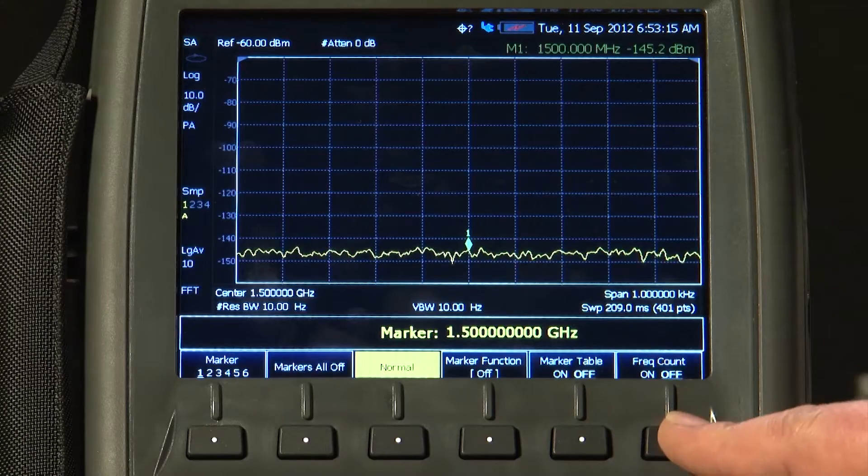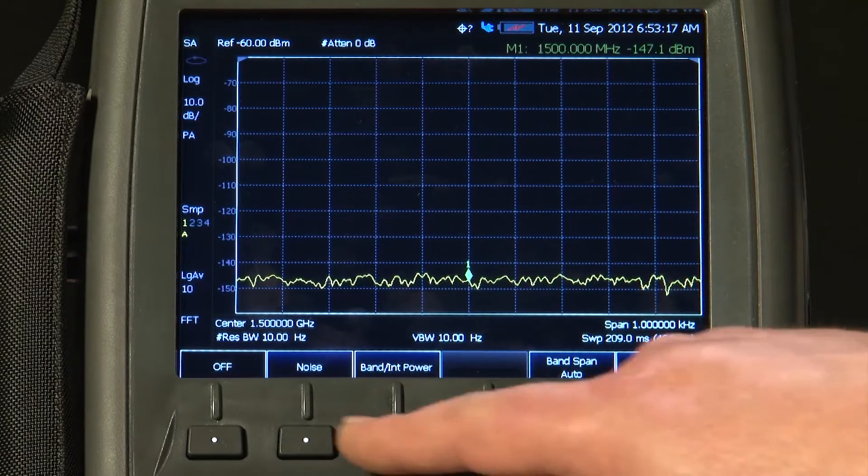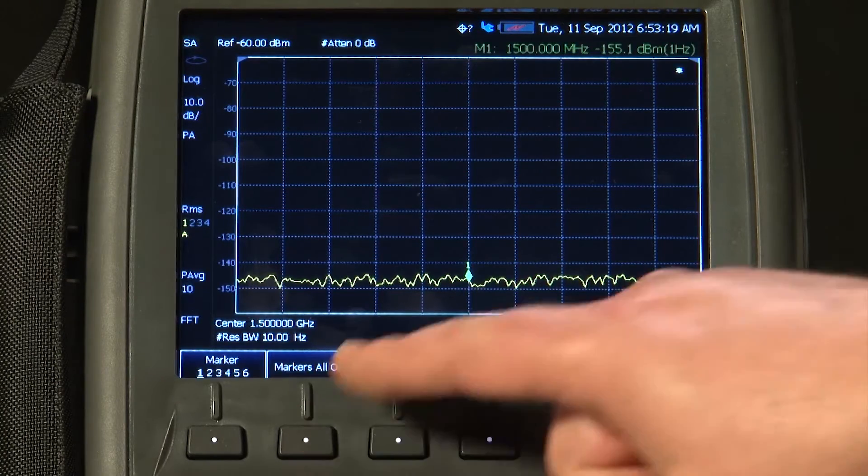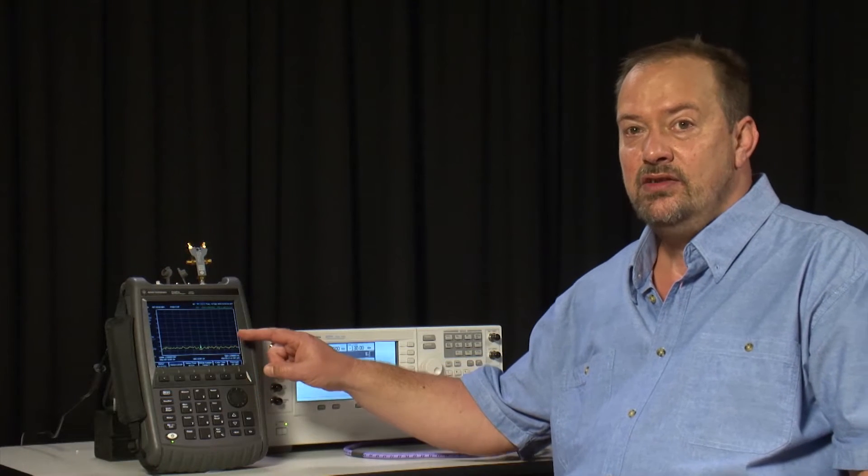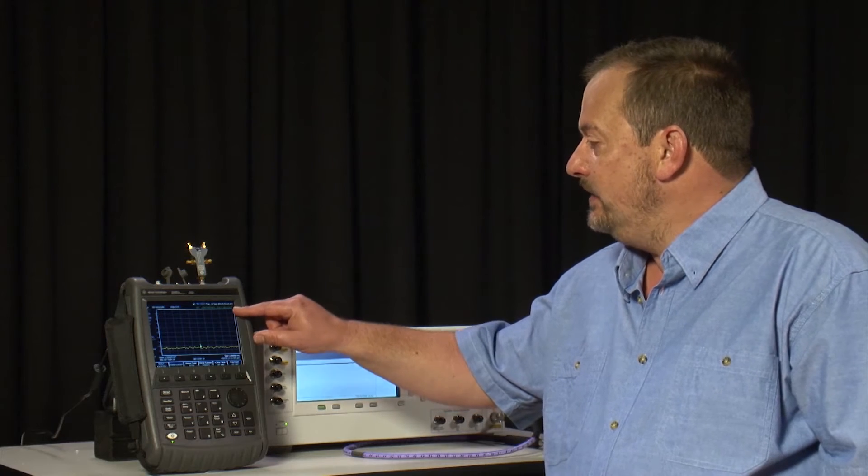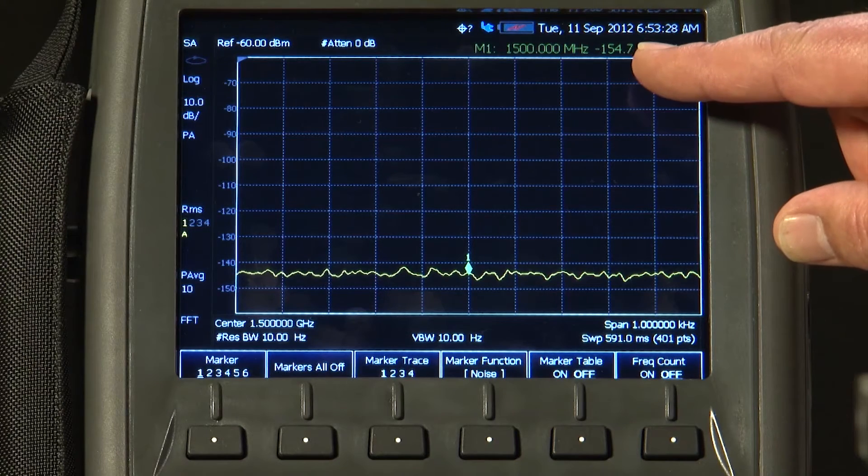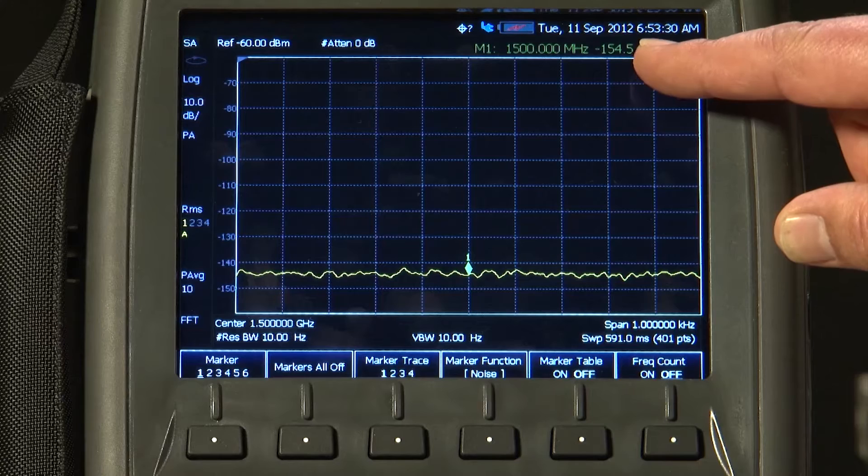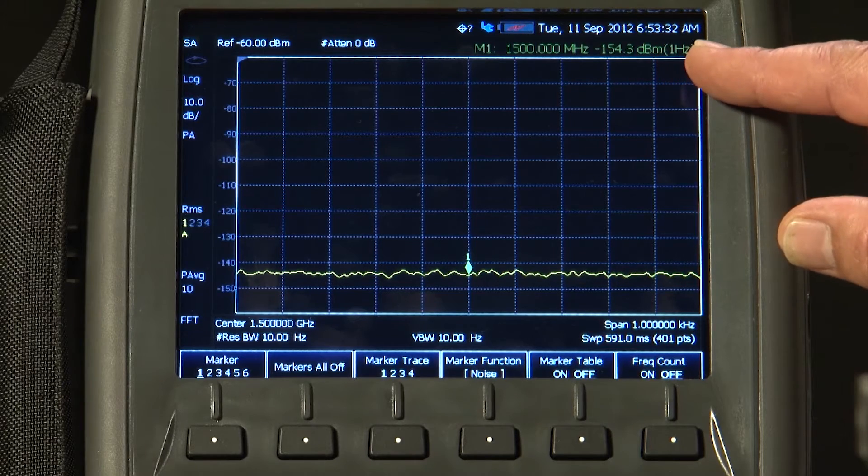If I press more marker function and the noise marker, this will normalize the amplitude measurement to make it as if we were measuring within a 1 Hz bandwidth. You can see here that we have a noise floor, or displayed average noise level, of about minus 154.7 dBm per Hz.